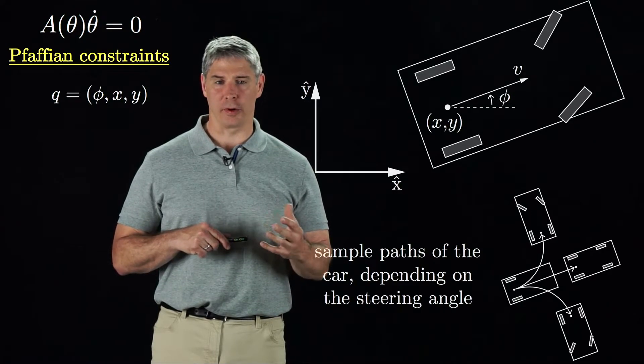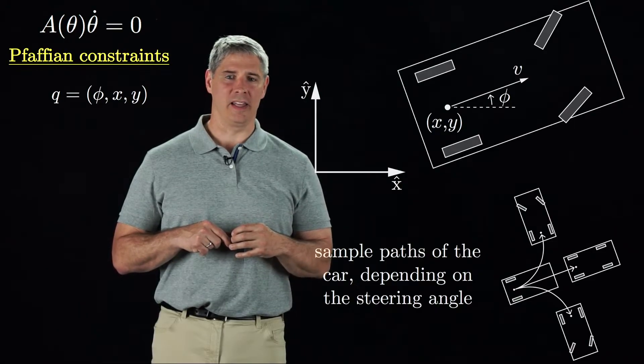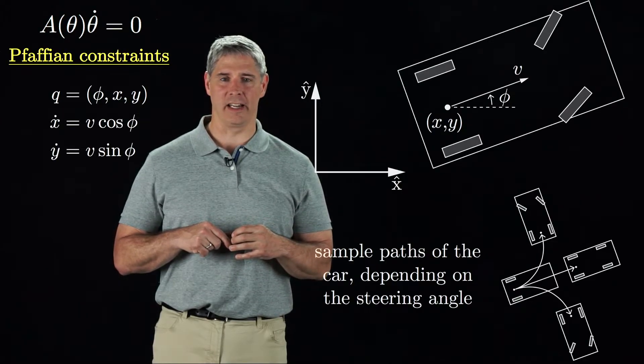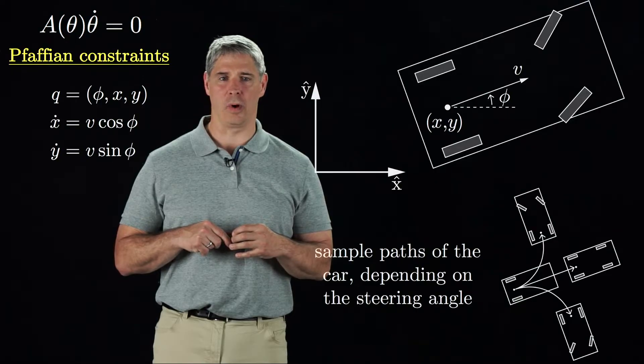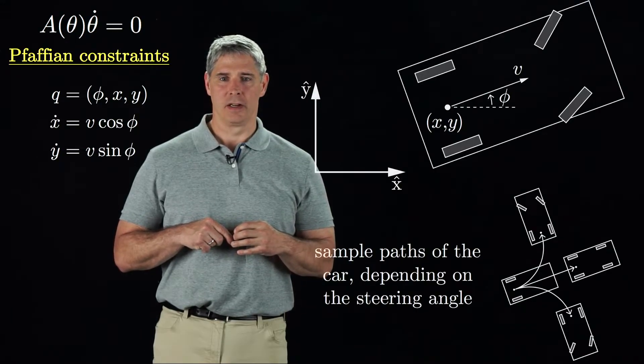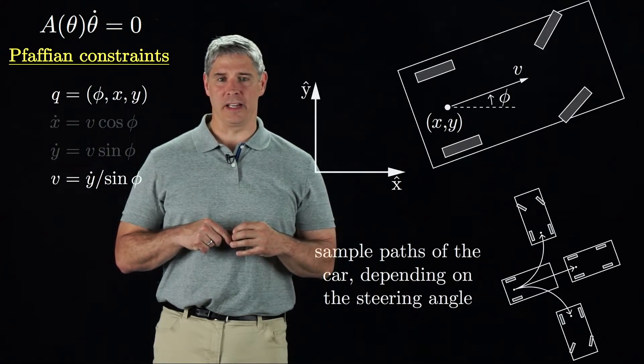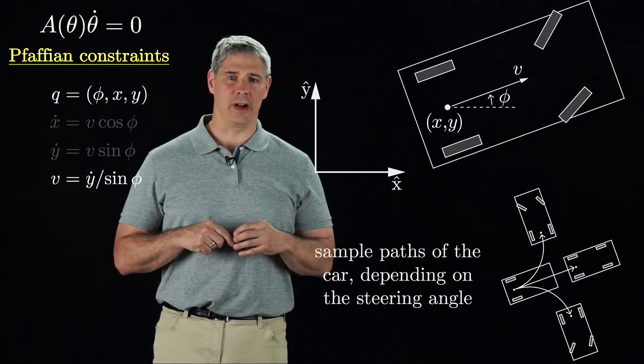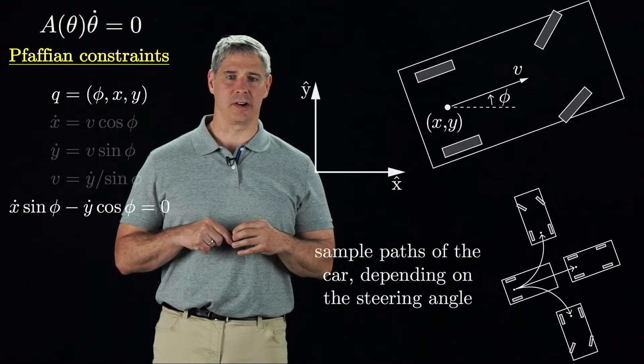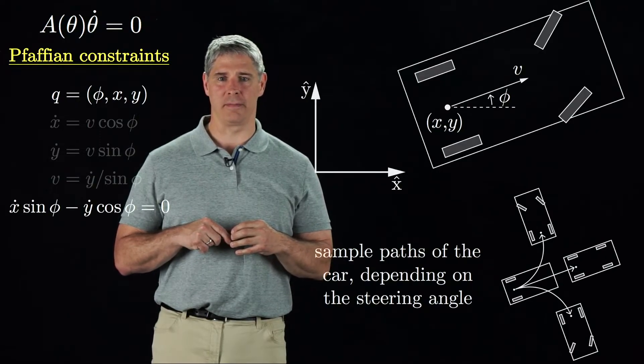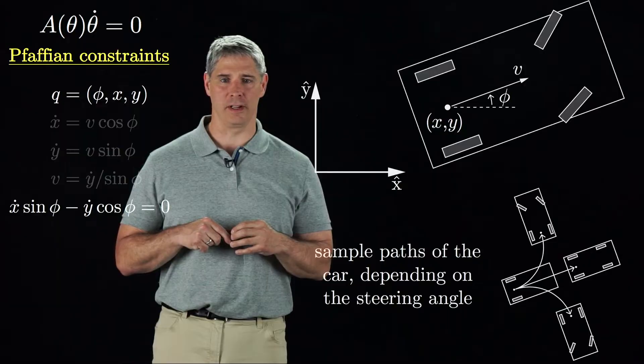If the forward velocity of the car is v, the xy velocity is x dot equals v cosine phi and y dot equals v sine phi. We can express v as y dot divided by sine phi and substitute this into our equation for x dot to get the velocity constraint x dot times sine phi minus y dot times cosine phi equals zero.